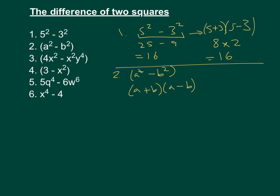Let's do the same for number 3. It's getting slightly more complicated. So we've got 4x² - x²y⁴. The square root of 4x² is 2x. So it's going to be 2x plus the square root of the next term, x²y⁴. The square root of that is xy². So plus xy² and then the same terms, but minus this time.